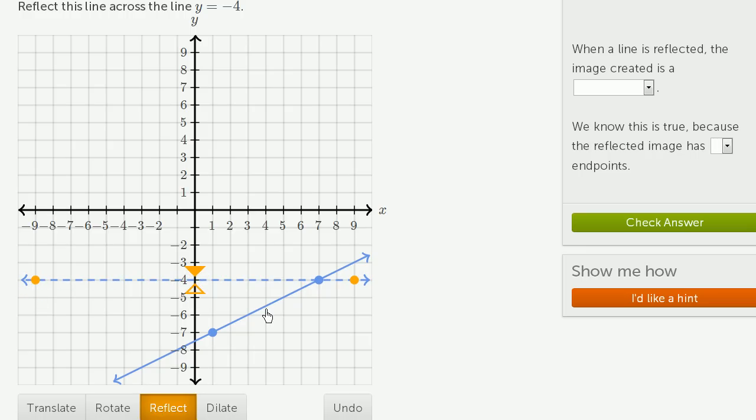We're going to reflect this line across y equals negative 4. Let's reflect it. And there you have it. We reflected it across y equals negative 4.